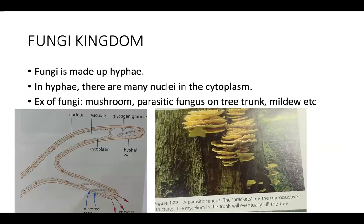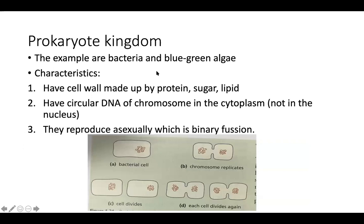The next kingdom is fungi. Fungi are made up of hyphae. In each hypha, there are many nuclei in the cytoplasm — as seen under a microscope, each hypha contains multiple nuclei. Examples of fungi include mushrooms, parasitic fungi on tree trunks, and mildew.